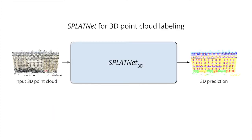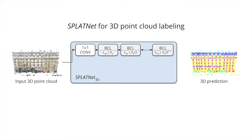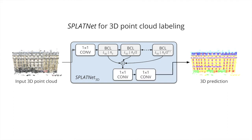With BCLs as building blocks, we propose a new neural network architecture which we refer to as SplatNet. We illustrate its use on the application of 3D point cloud labeling, where the task is to give every point in the scene a label prediction. The network starts with a single one-by-one conv layer, a point-wise operation processing each point separately without any data aggregation. The signal is then passed through a series of BCLs generating a hierarchy of point features. The outputs of all BCLs are concatenated and then passed through additional one-by-one conv layers before outputting the final 3D predictions.